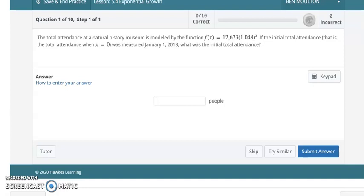The total attendance at a natural history museum is modeled by the function f(x) = 12,673 × 1.048^x. If the initial attendance, that is the total attendance when x = 0, was measured on January 1, 2013, what's the initial total attendance?